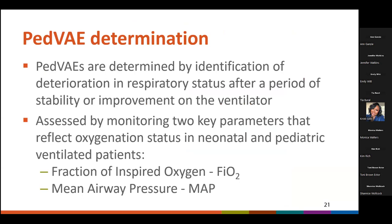PVAEs are determined by identification of deterioration in respiratory status after a period of stability or improvement on the ventilator, which is assessed by monitoring two key parameters that reflect oxygenation status in neonatal and pediatric ventilated patients. These are fraction of inspired oxygen, or FiO2, and mean airway pressure, or MAP. We're going to look at each of these parameters individually.